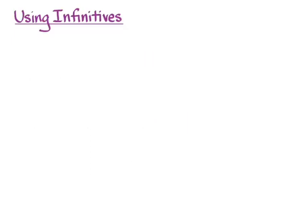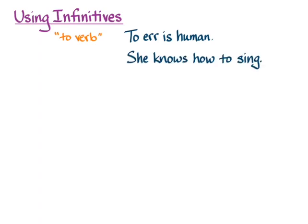Let's think now about how to use infinitives. I've said that the default translation is to verb, which is the English infinitive, and that can be quite convenient. Let me show you a couple of examples of the infinitive in English. We have to err is human, she knows how to sing, and I order you to sit. These are just a few of the things that infinitives can do in English.